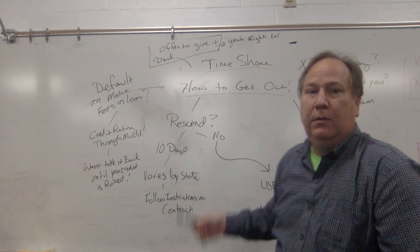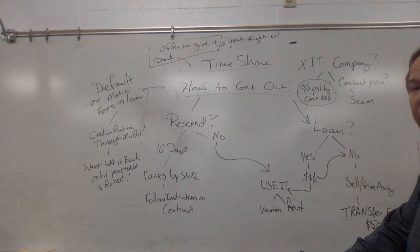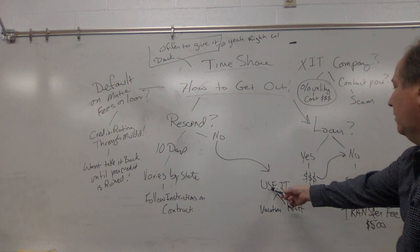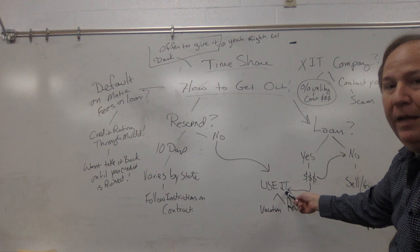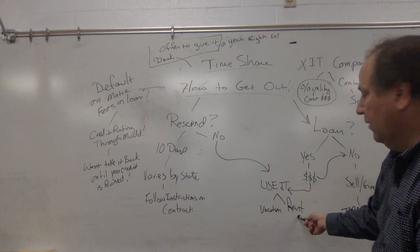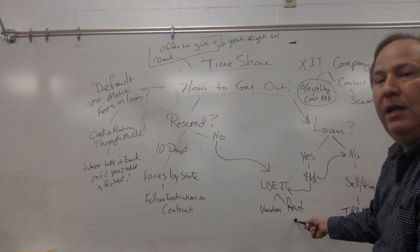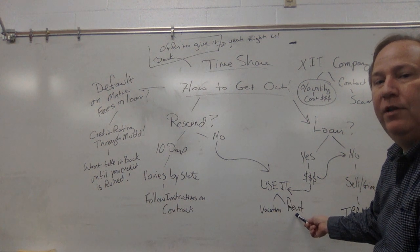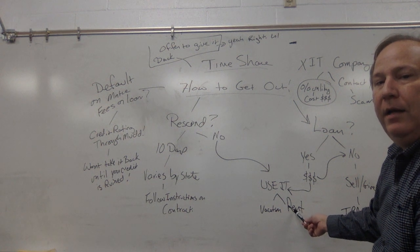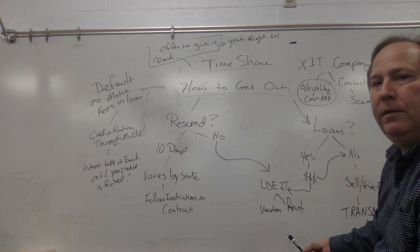If it's not an option to get out for the rescission period, then learn to use your timeshare. Now there's two ways that you can use your timeshare. One way you get your money back. You could rent out the time, so you make a reservation through your timeshare, you let your cousin use the reservation and they pay you $1,100 for the week.